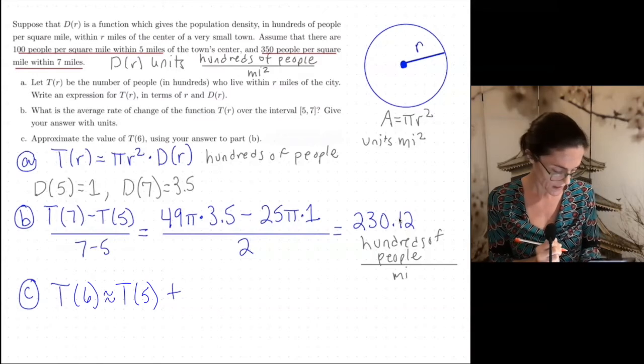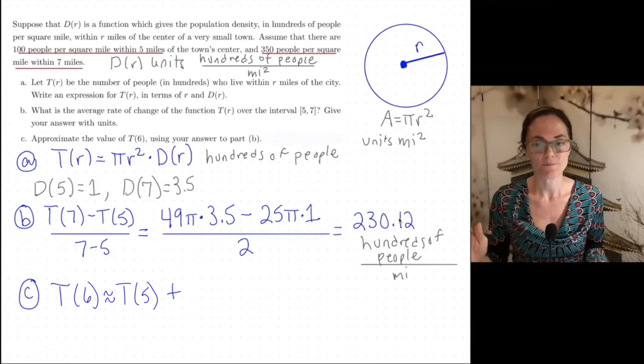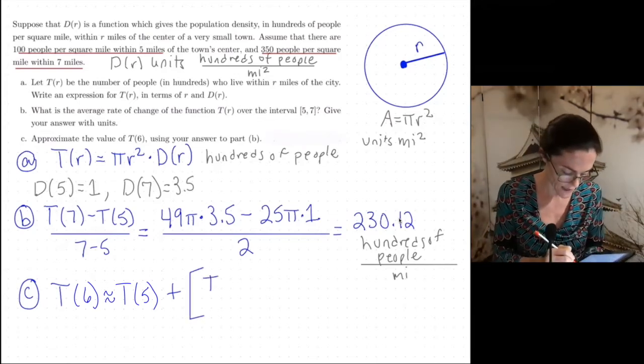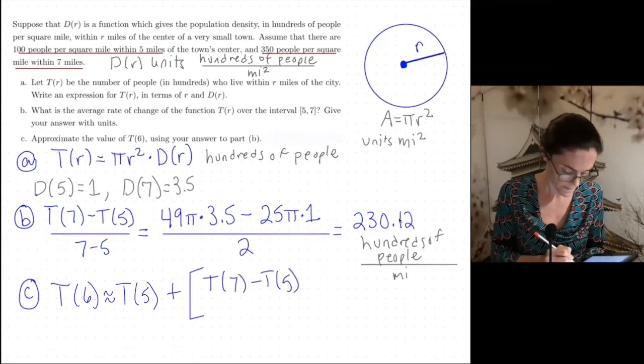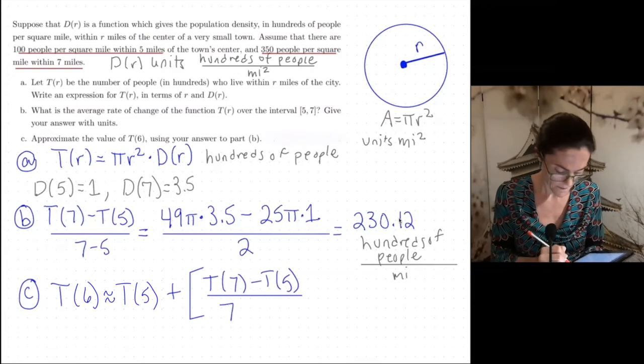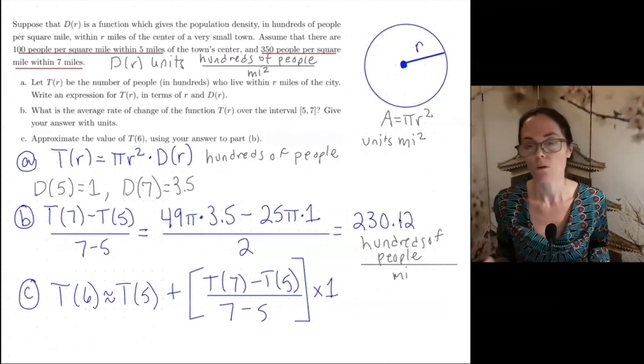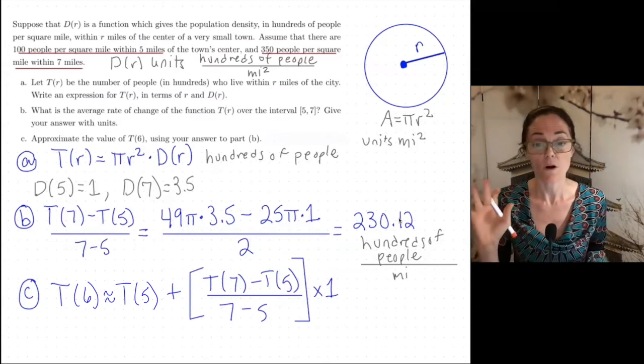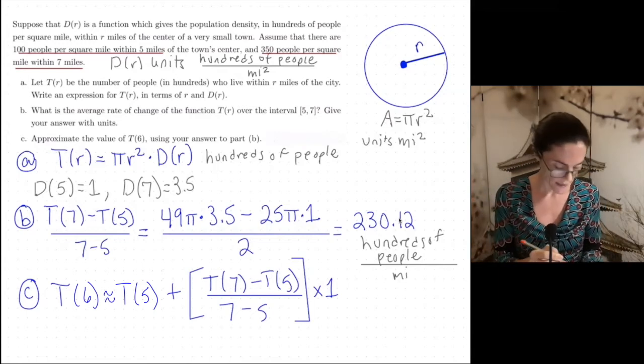which is in hundreds of people. And then we can add this, which is the average rate of change on this interval. So this is in hundreds of people per mile and then times one mile. That would get us to 6. Right? But this would be in overall hundreds of people. And if we add the two, our units is still in hundreds of people.